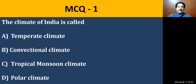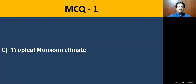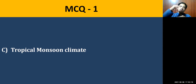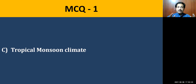Take a paper and pen and mark all those, then calculate how many questions you answered correctly. The correct answer is tropical monsoon climate. India has tropical monsoon climate because India extends from 8.4 degrees northern latitude to 37 degrees latitude, so most of India's area comes within the tropical area.